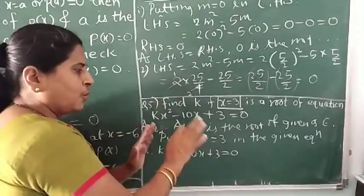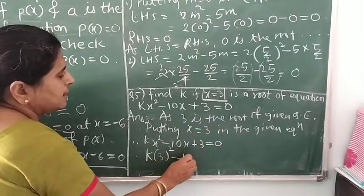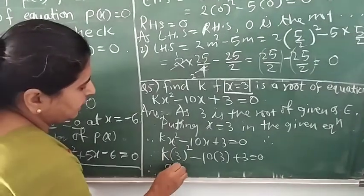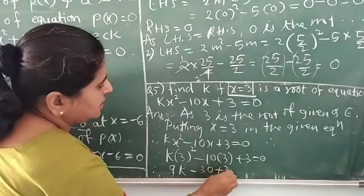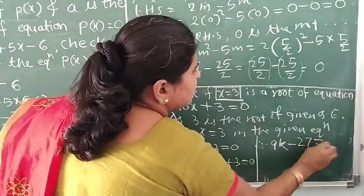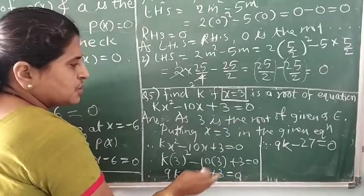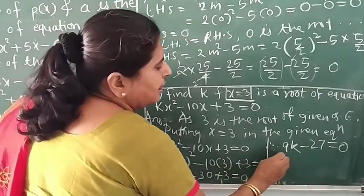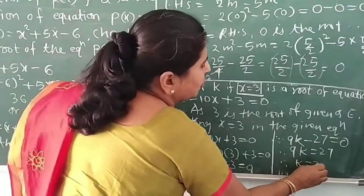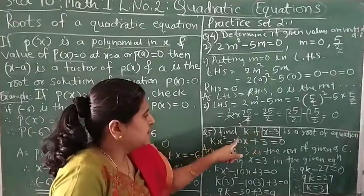Substituting x = 3: k×(3)² − 10×3 + 3 = 0, giving 9k − 30 + 3 = 0, so 9k − 27 = 0. Note: 30 minus 3 is 27, and the sign is negative because the signs differ. Therefore 9k = 27, and k = 3. This is how we find the value of k when a particular value is given as the root.